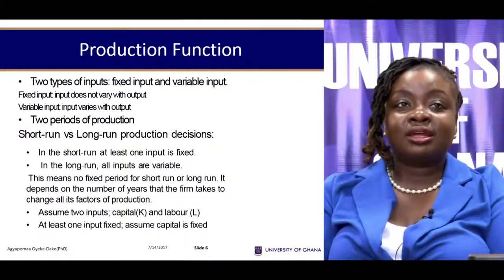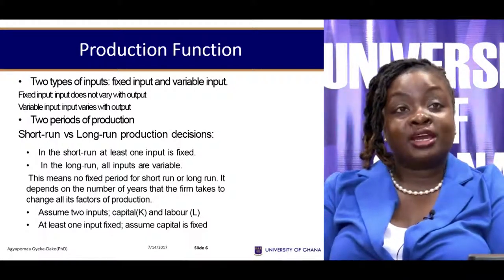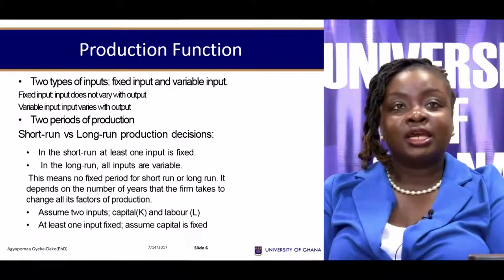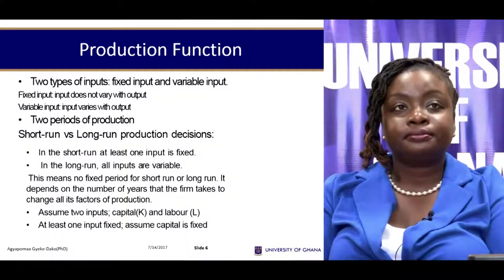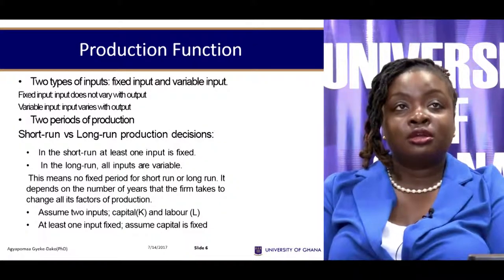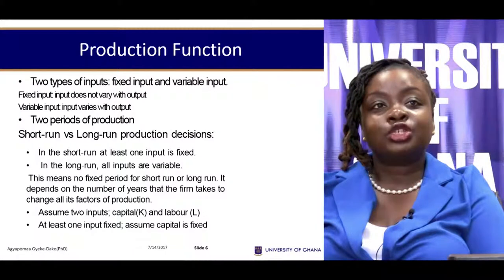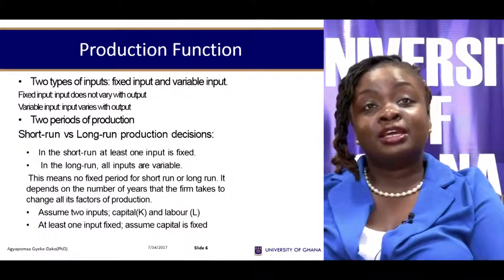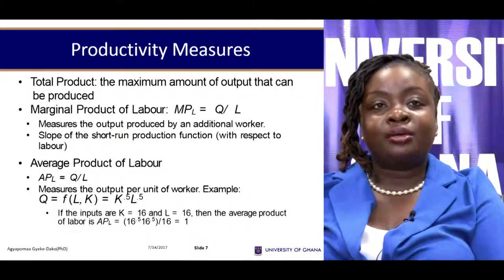Unlike debt, where short-term means one year or less, in production we cannot give a specific time period to the short run or long run. It depends on how long it takes the firm to vary all its factors of production. Firm A might be in the short run for just two weeks, while Firm B could be in the short run for up to ten years, depending on how long it takes each to vary all their factors.